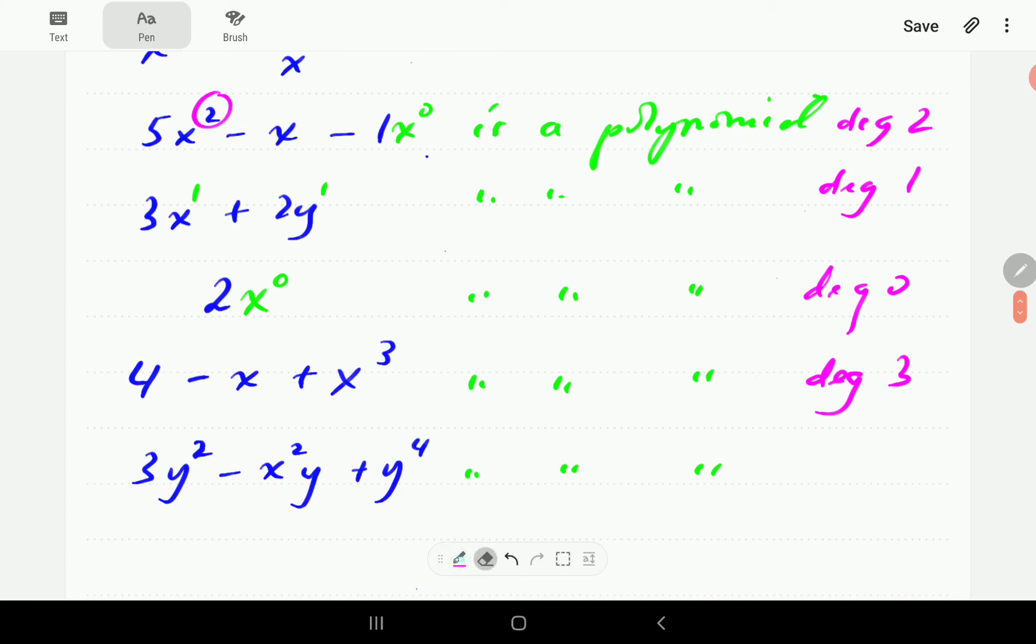This one is a polynomial of the highest power. Got 2, sorry, 4, 1, and 2, 2 here. So that's a polynomial of degree 4.